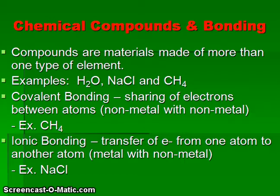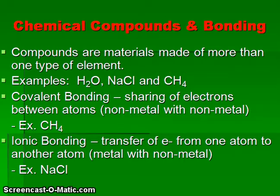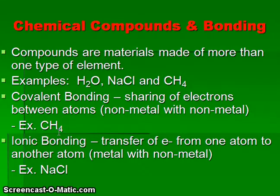Chemical compounds form when elements are bonded together. Some examples include H2O (water), NaCl (sodium chloride or table salt), and CH4 (methane). Covalent bonding is when electrons are shared between atoms — this occurs when non-metallic atoms bond with other non-metallic atoms. Methane and water are examples of covalent bonding.